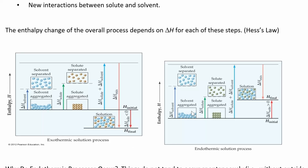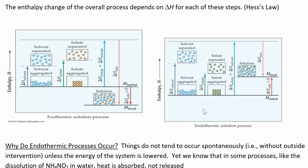If the endothermic step — separating the solvent — has a really large positive delta H, and when you put the solution back together you don't release quite as much energy, then overall you get an endothermic process. So you can have both when you make a solution — sometimes they give off heat, and sometimes they absorb heat. The exothermic one releases heat; the endothermic one absorbs heat.